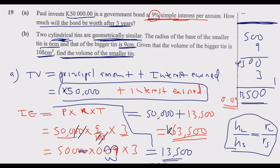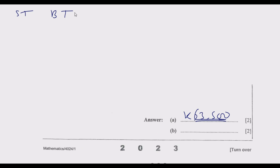Since the ratio remains the same, we can use it to find the volume — we just need to cube it. The ratio of the radius of the small tin to the big tin is 6 to 9. Dividing both by 3 gives us a simplified ratio of 2 to 3.